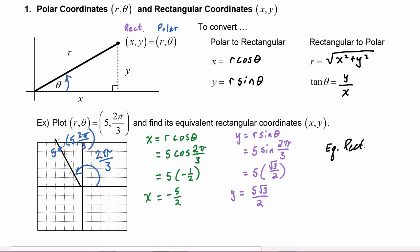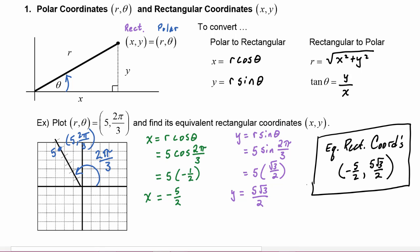So the equivalent rectangular coordinates are negative five-halves comma five radical three over two. Looking at our picture, you can see that if we drop down to the x-axis, it is two and a half in the negative direction, so it makes sense that the x-coordinate is negative five-halves. The y-coordinate is five radical three over two.